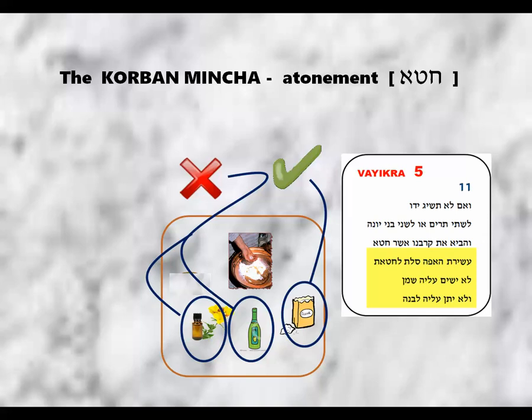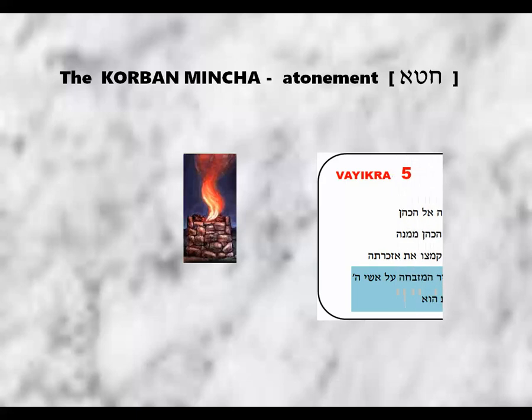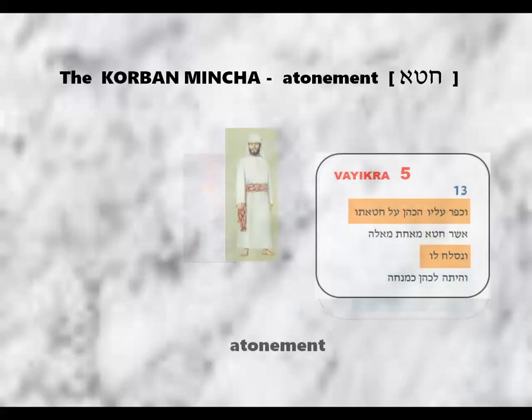As with every Karban Mincha, there was a Khmitsa process where the officiating Kohen would scoop up a three-fingered handful of the flour, which was burnt upon the Mizbeach. With that, the Kohen facilitated an Atonement for the individual for his or her sin, and the Nislach Law — the individual was forgiven.